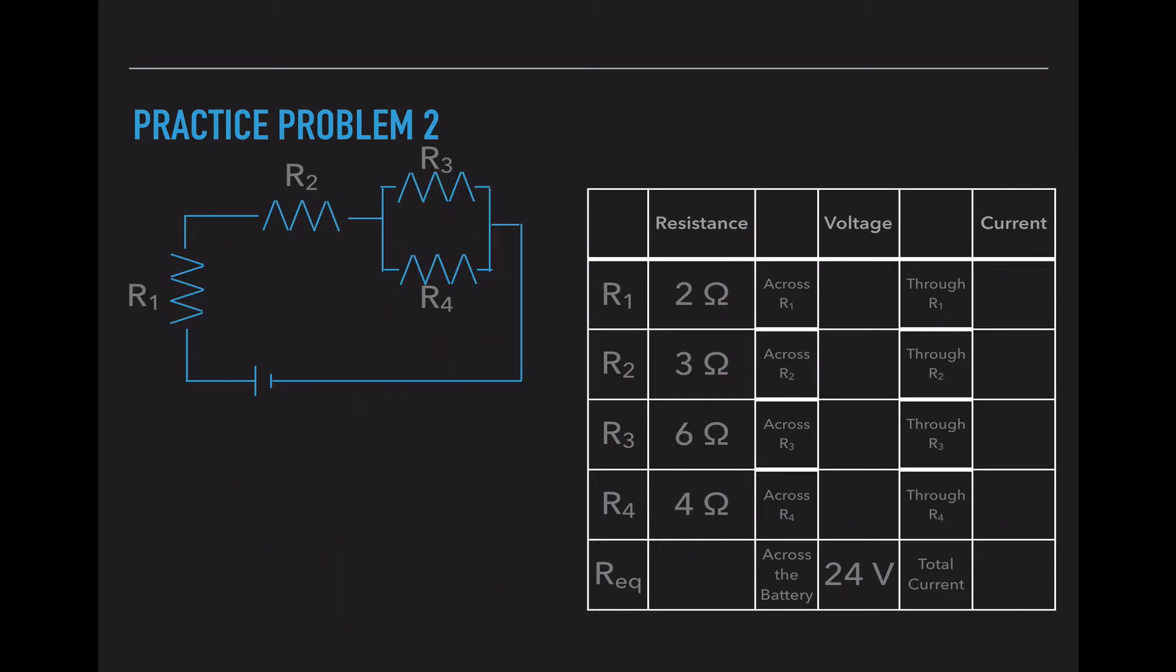So practice problem number two. I've rearranged this circuit a little bit. So now I have two series resistors and then two parallel resistors. Again, I want to combine my parallel resistors first. So 1 over REQ is equal to 1 over 6 plus 1 over 4. That is 0.1667 plus 0.25, which is the value of 0.41667.